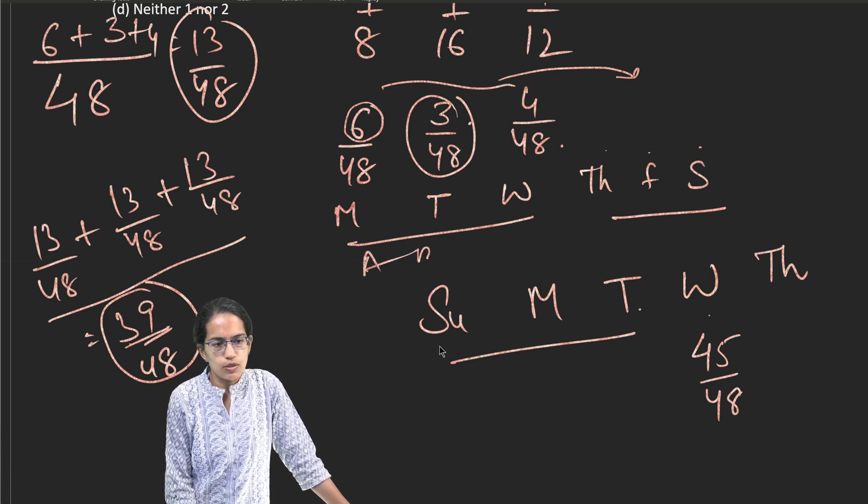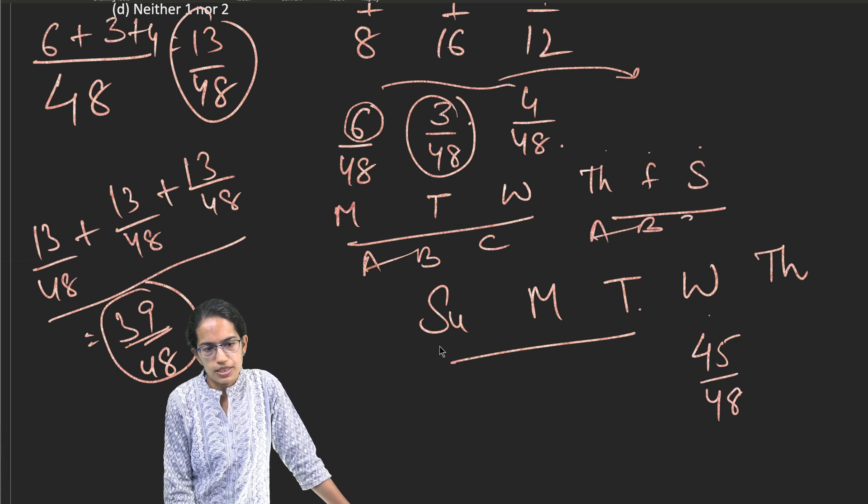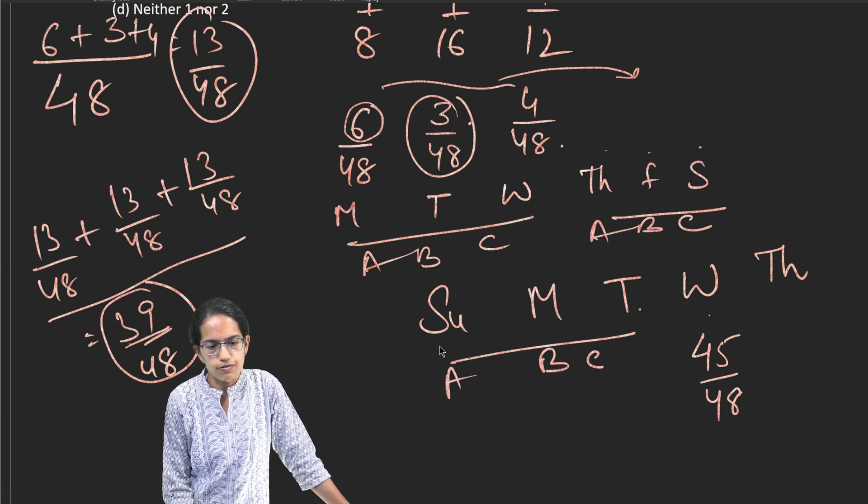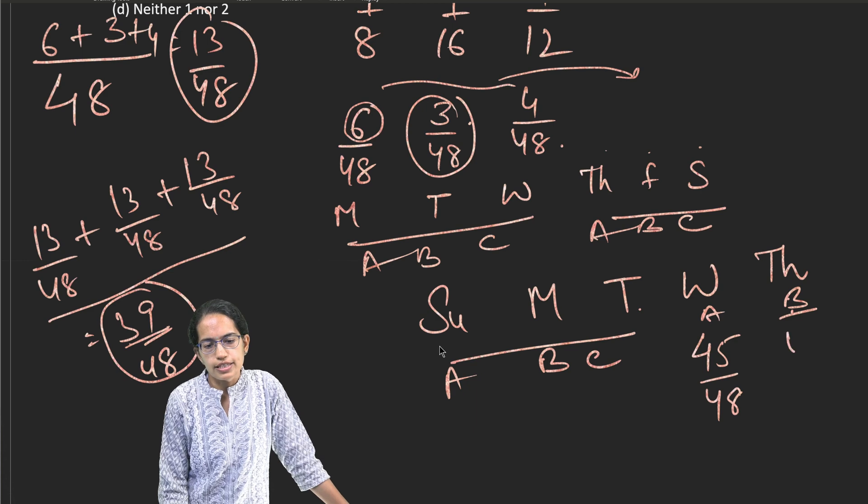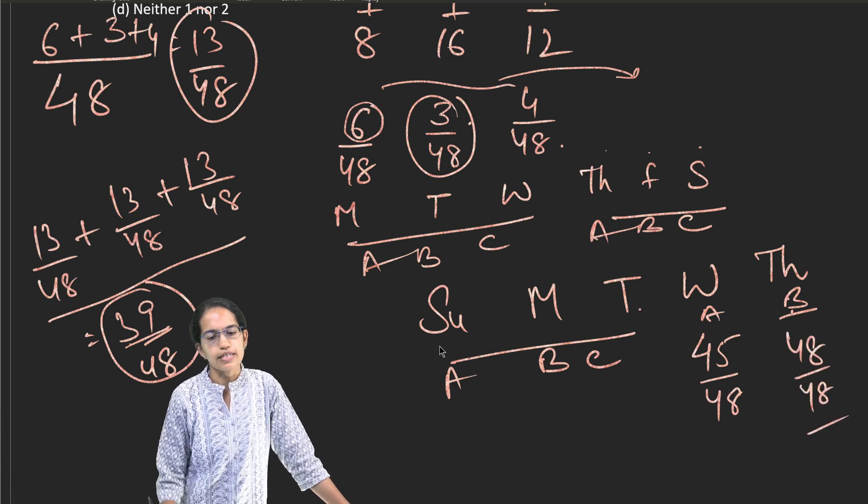Now, on the next day, that is Wednesday, I would have 6 more added to 39. So that would make it 45 by 48 by Wednesday. And then again Thursday, it would become 3 more. So this 3 by 48 would be added again. So this is where A, B, C works. And then again A, B, C works. Then again A, B, C would work. And then again A and B would work. And this would make it 45 by 48. That is one.